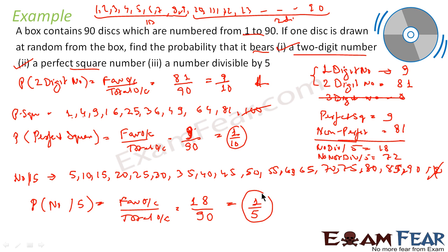To summarize the approach: when finding the probability of a two-digit number, find the count of one-digit and two-digit numbers. When finding the probability of a perfect square, find the count of perfect squares and non-perfect squares. When finding the probability of a number divisible by 5, find the count of multiples of 5 and numbers not divisible by 5.